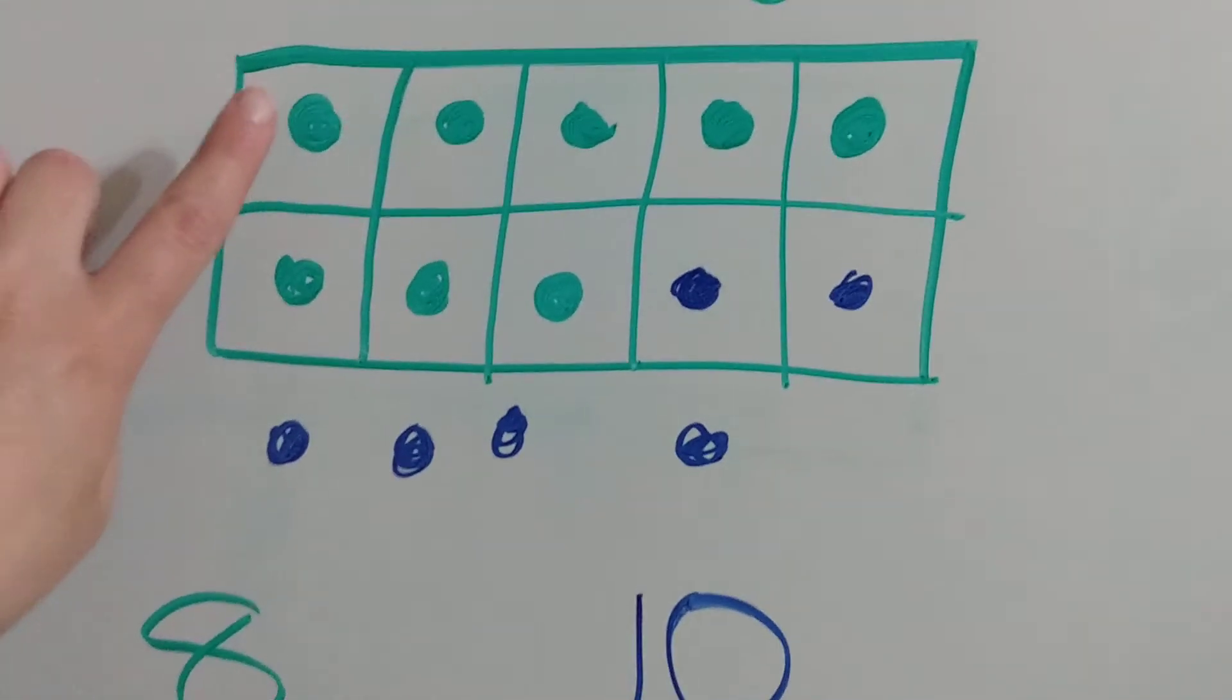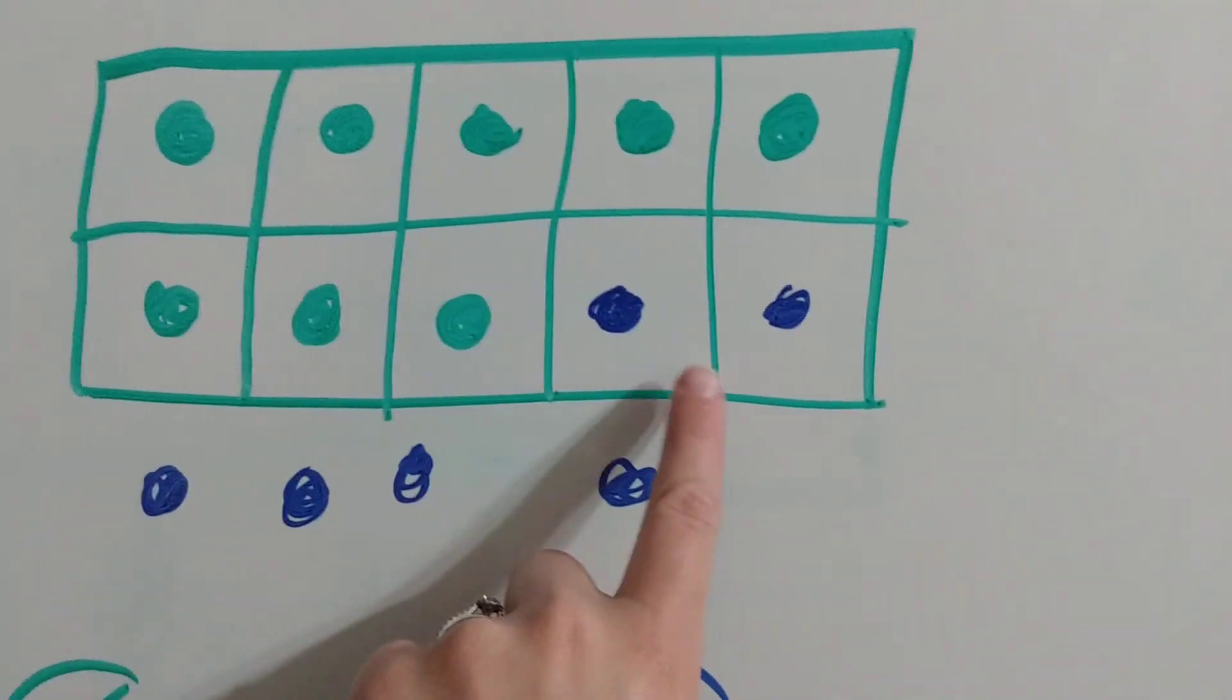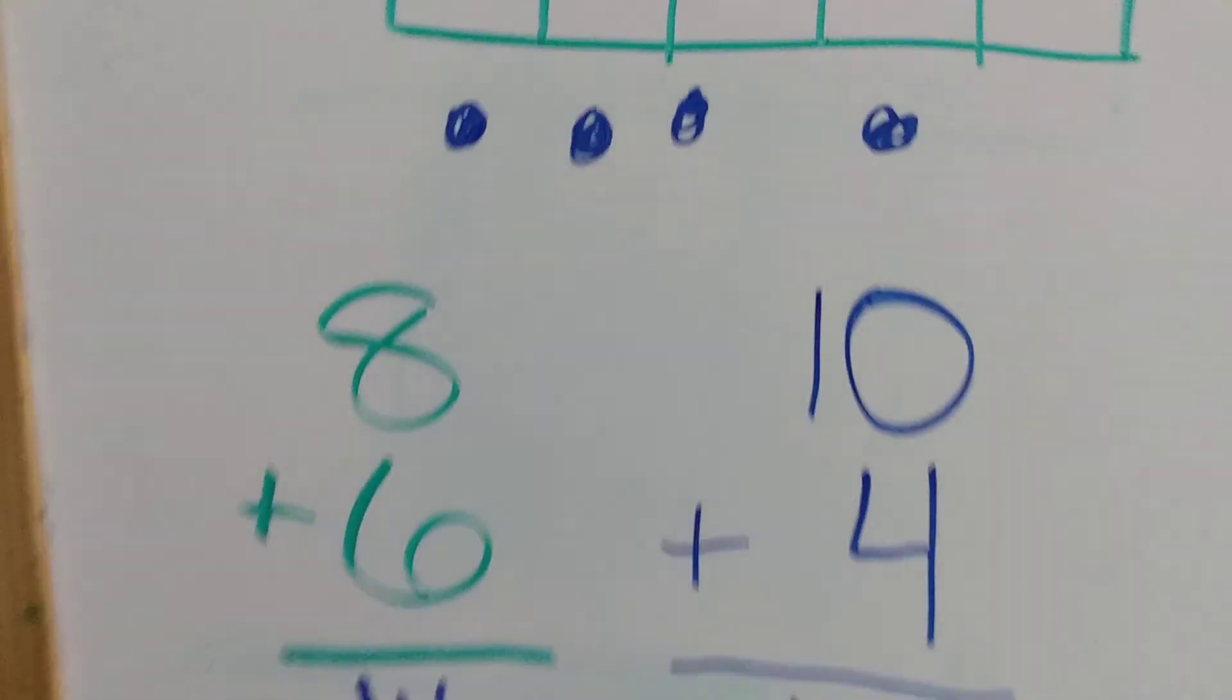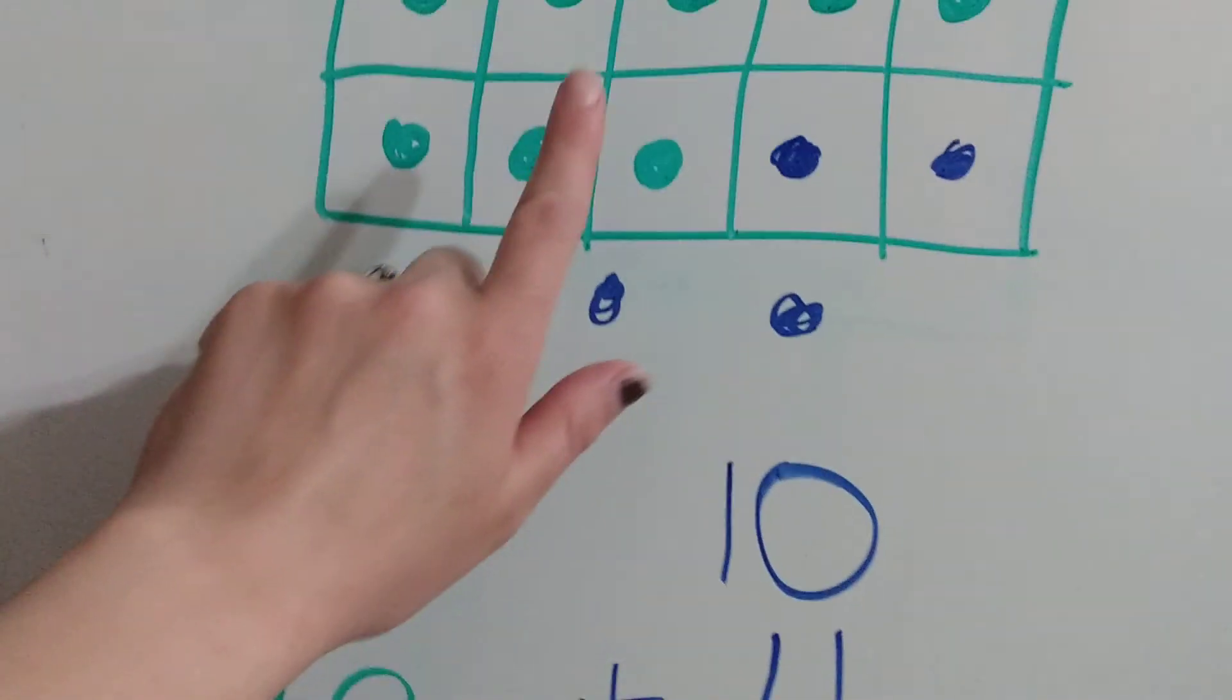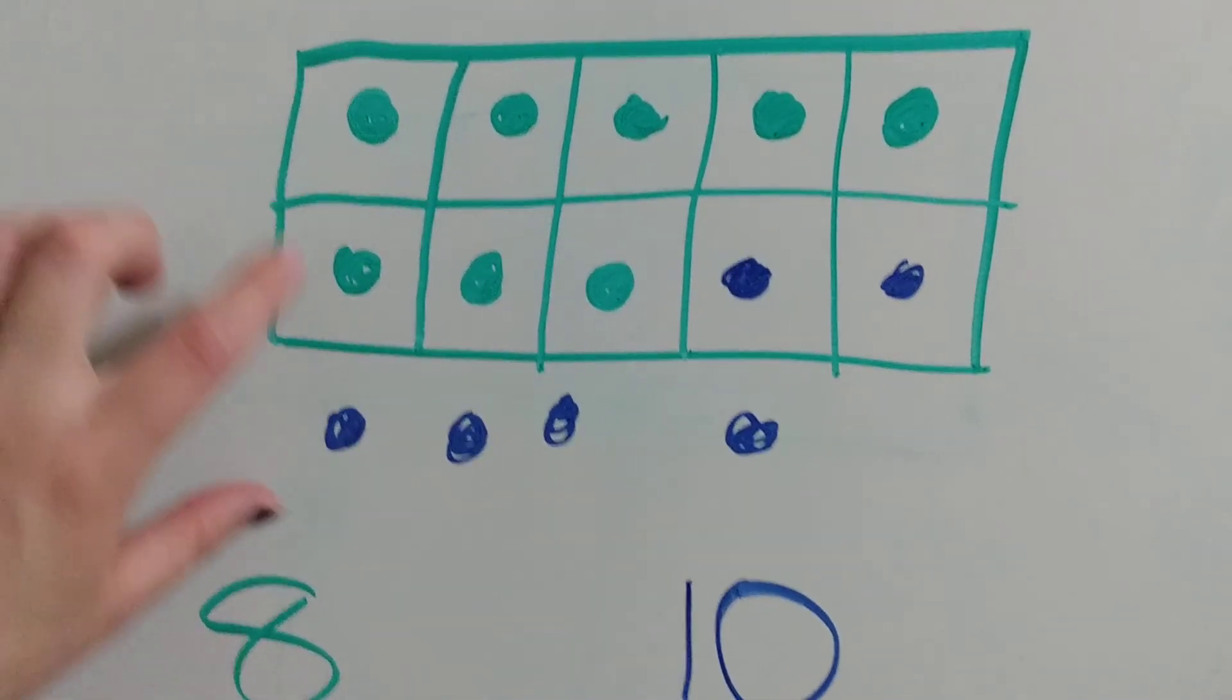So what we did up here is we did 8 is in the green plus 6 in the blue which would equal 14. And that's the same as 10 plus 4.